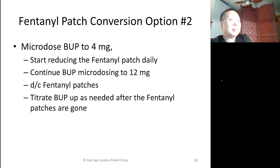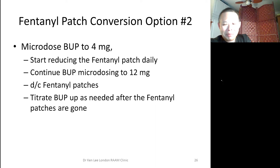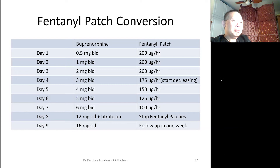Here's a case example of the last fentanyl patch conversion we did, on the BID schedule. As you can see, on day four we started decreasing the patches by 25 micrograms per day, continuing upward with buprenorphine. Once microdosed up to 12 milligrams, stop the fentanyl patches and titrate up. Once comfortable, that's your daily dose and you can follow them up in a week.